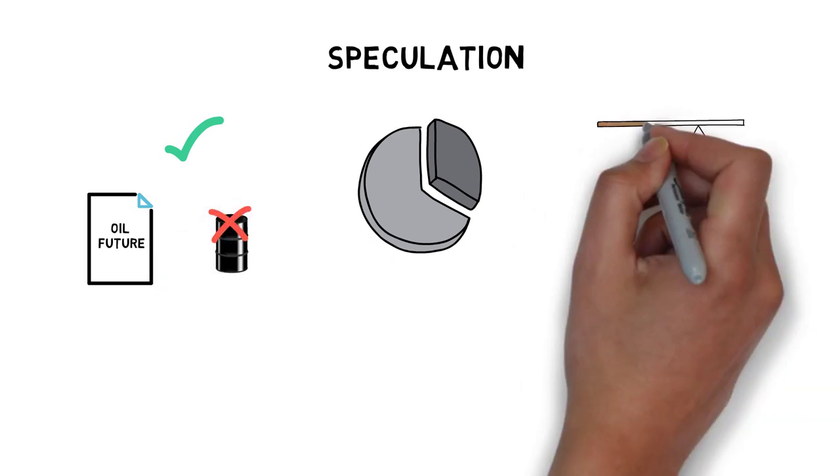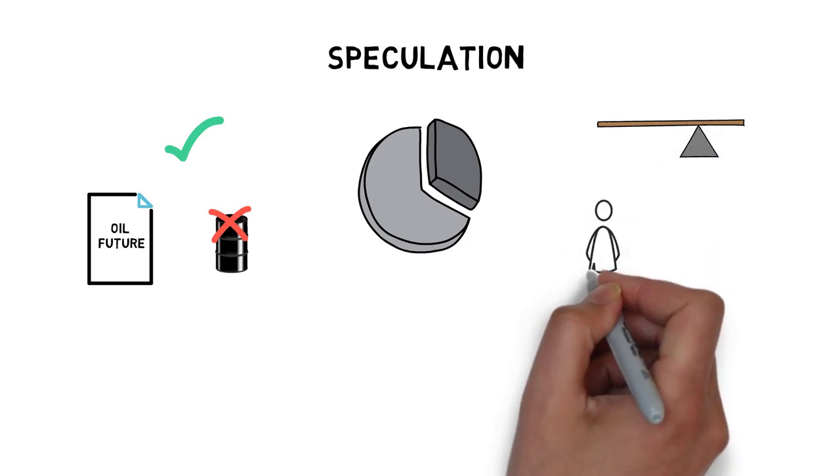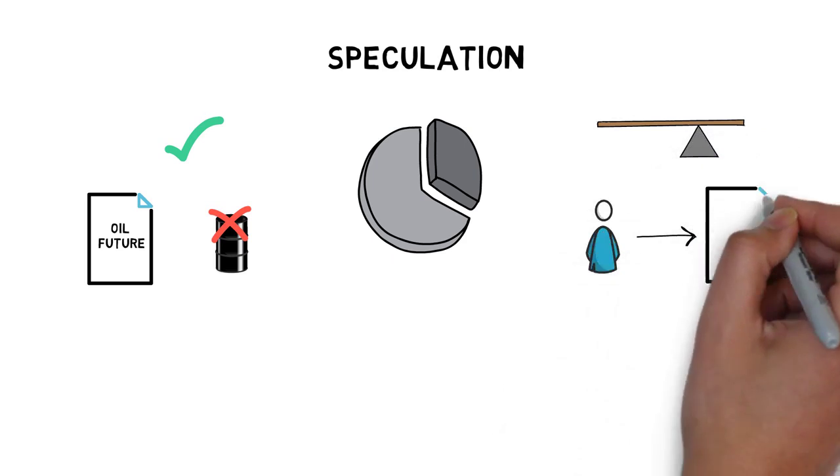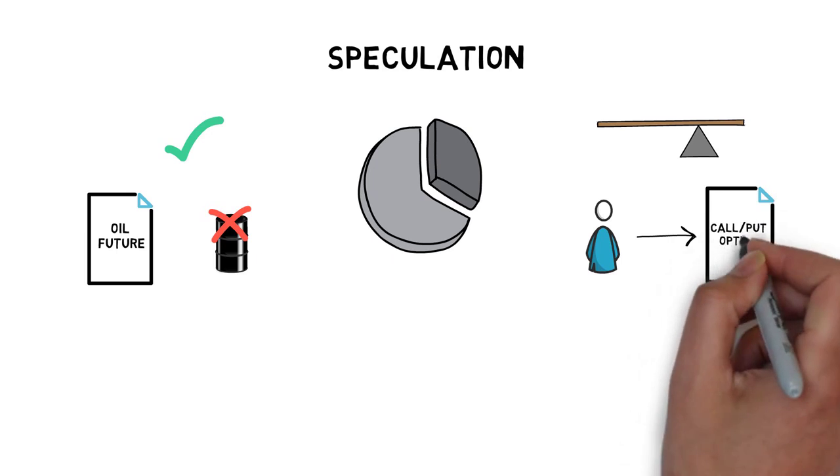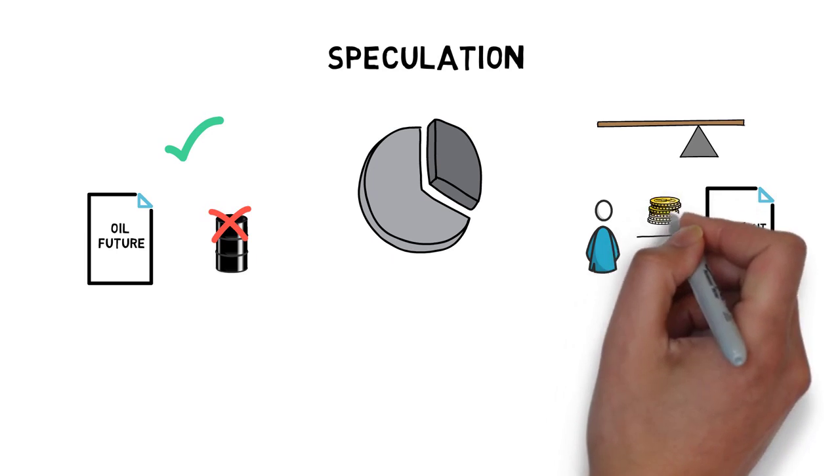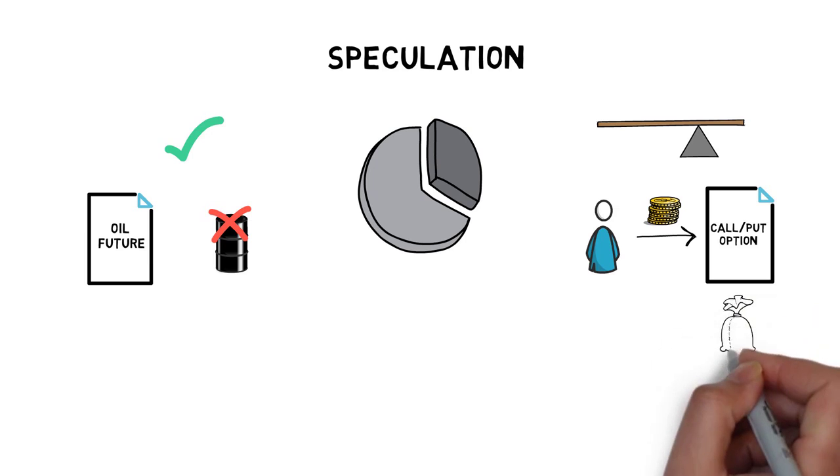They can also provide easy access to leverage. A trader can purchase a call or a put option by providing only enough funds to cover the option premium and gain exposure to a significant amount of the underlying asset.